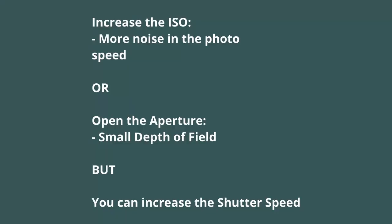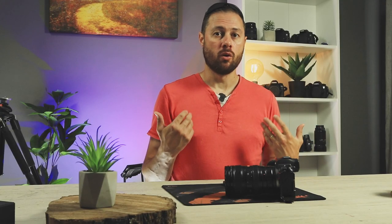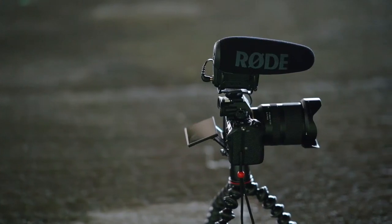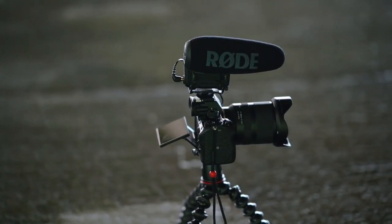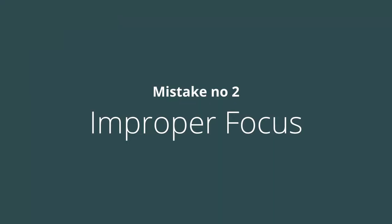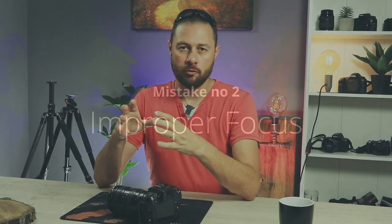To compensate, you can increase the ISO — that gives you the ability to set a faster shutter speed. You can also open the aperture a little bit more, which lets more light into the sensor and allows a faster shutter speed. Or you can put the camera on a tripod, and at that point it is completely stabilized.